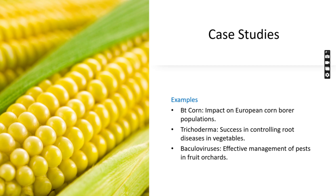Here are a few case study examples. Bt corn, a genetically modified crop, has had a significant impact on controlling European corn borer populations.